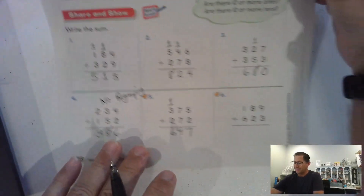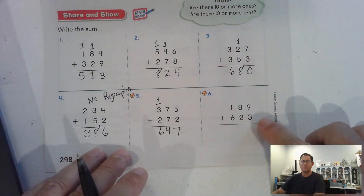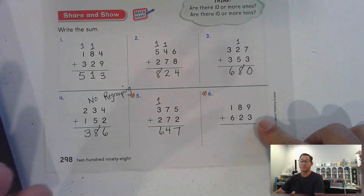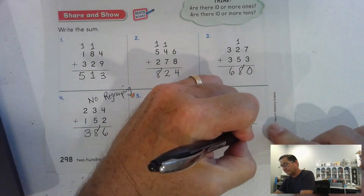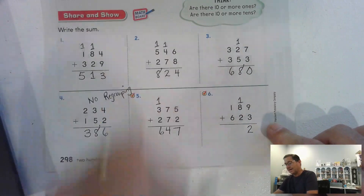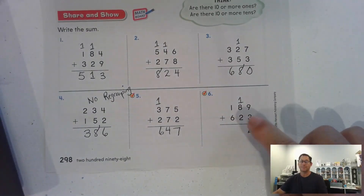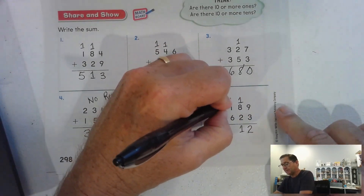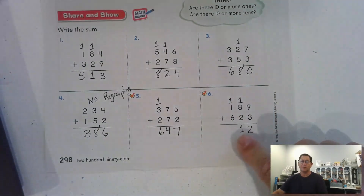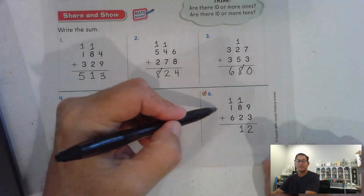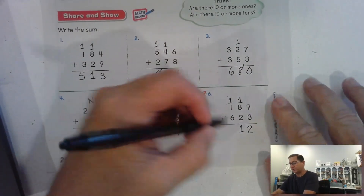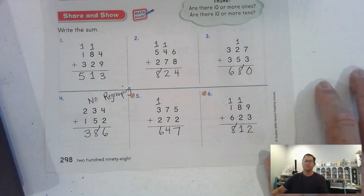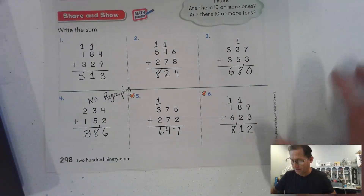Number six: we have nine ones and three ones — we have to regroup, that's twelve ones, regroup as one ten and two ones. Eight and two is ten tens, plus the regrouped ten is eleven tens — regroup that as one hundred and one ten. Six, seven, plus the regrouped hundred, eight hundred — we don't have to regroup the hundreds. And two ninety-nine.